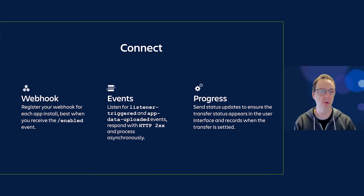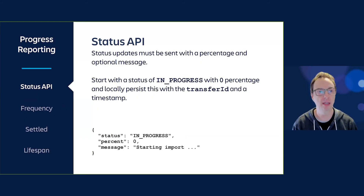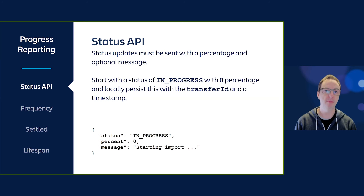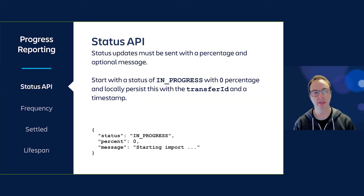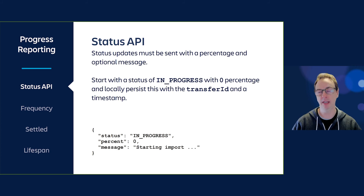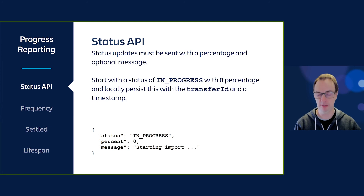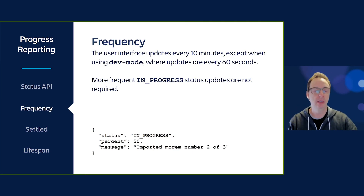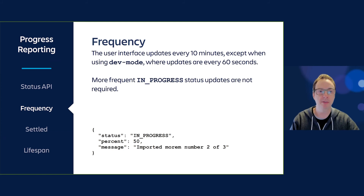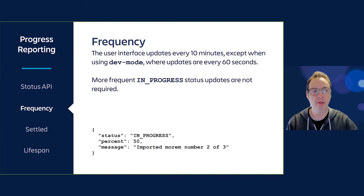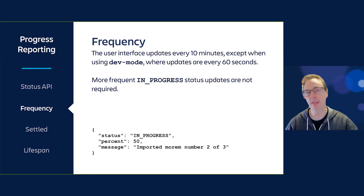For progress reporting we have a status API. Status updates must be sent with a percentage and an optional message. You should start with the status of in-progress and a zero percentage, then locally persist this value with the transfer ID and a timestamp — this helps you log what work you've done already. The user interface updates every 10 minutes for the admin, except when using dev mode where it updates every 60 seconds, so you don't need to send more frequent in-progress status updates.